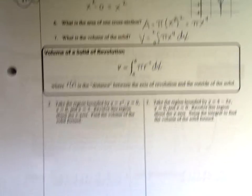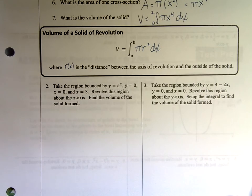So let's take a look at the region bounded by y equals e to the x, y equals 0, x equals 0, x equals 3. And you're like, what? Revolve this region about the x-axis. Find the volume of the solid formed. Okay.